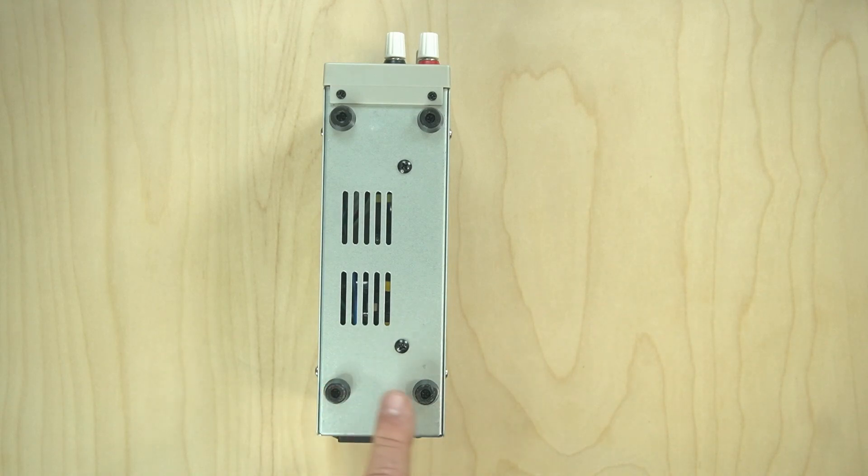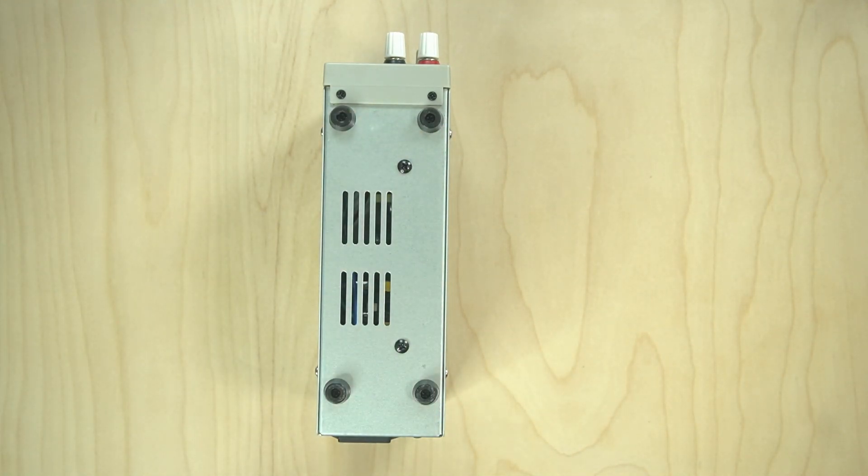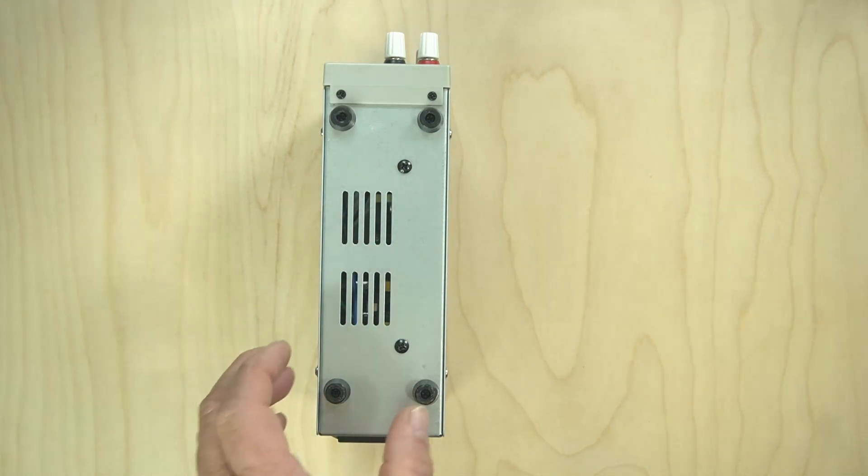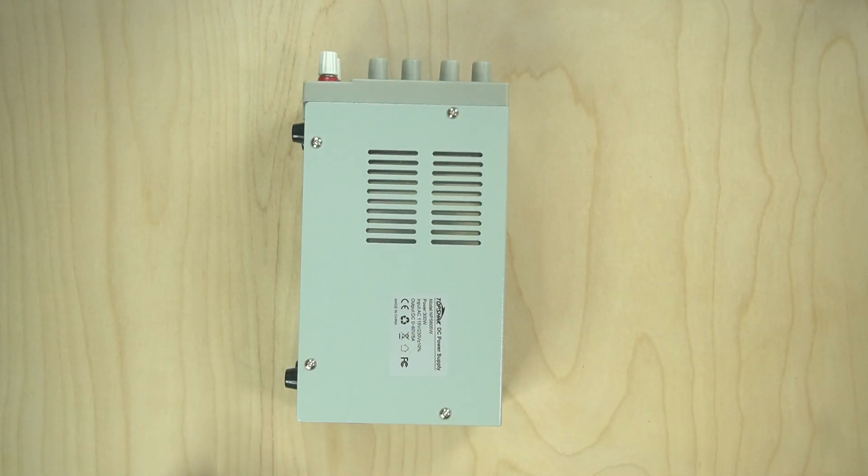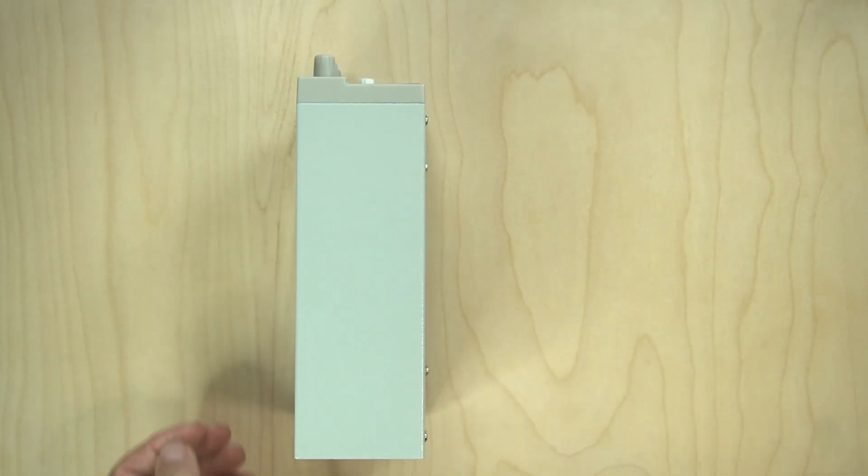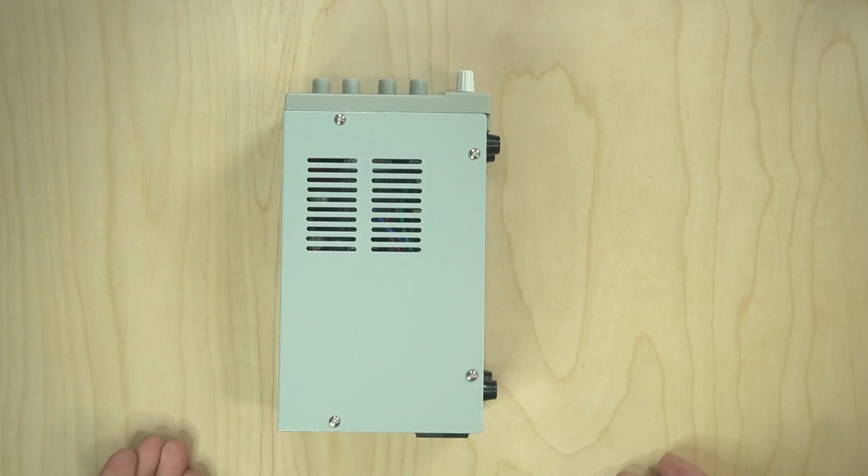Now on the bottom you have a couple feet, four of them there, for setting on here so it doesn't scratch your desk. A little vintage down here. You have the vents on the side, screws that hold it. And we are going to open this up, take a look inside. And the top is just plain. And again on the other side, more vents.